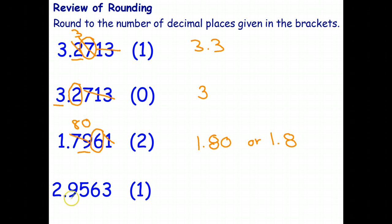And this one, rounding it to one decimal place. I underline the one decimal place and then I have to circle the number behind it, cross out the other digits. It doesn't matter what they are.